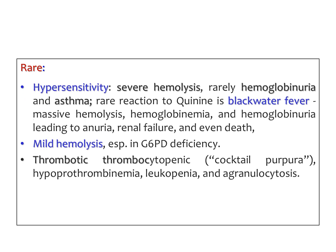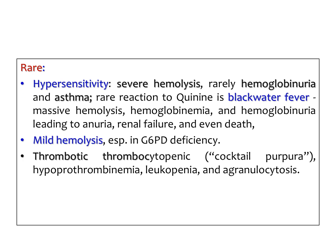Rarely there is hypersensitivity, mild hemolysis, and thrombocytopenia. Hypersensitivity and allergic reactions especially involving RBCs can cause severe hemolysis, hemoglobinuria, and asthma. A rare allergic reaction is blackwater fever, due to massive hemolysis causing hemoglobinemia and hemoglobinuria, leading to oliguria, renal damage, renal failure, and even death. Mild hemolysis is especially seen in patients with glucose-6-phosphate dehydrogenase (G6PD) deficiency. Thrombotic thrombocytopenic purpura — a combination of different reactions — along with hypoprothrombinemia, leukopenia, and agranulocytosis is also seen.